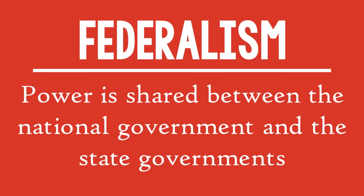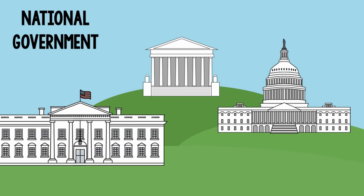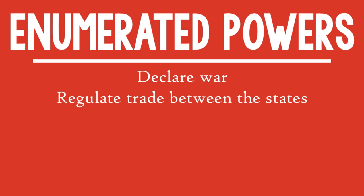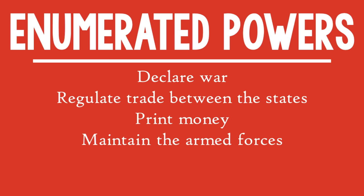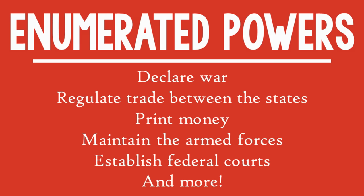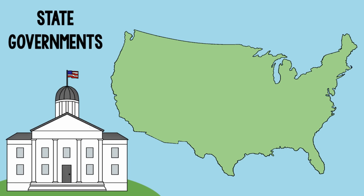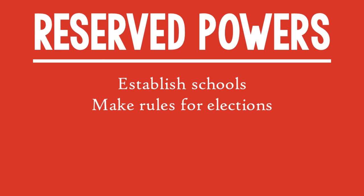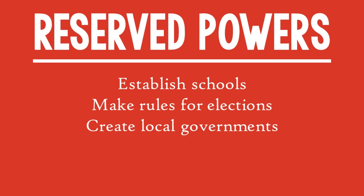Federalism. Power is not just shared between the branches of government, but also between the national government and the states — this is the principle of federalism. Certain powers belong just to the national government; these are called enumerated powers. Only the national government has the power to declare war, regulate trade between the states, print money, maintain the armed forces, and establish courts, and more. The powers reserved just for the states are called reserved powers. These can include establishing schools, making rules for elections within the states, creating local governments, and basically anything else not delegated to the national government.